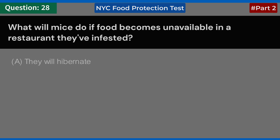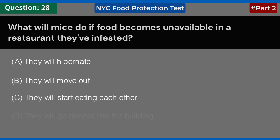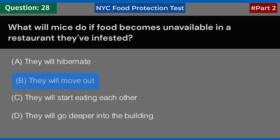What will mice do if food becomes unavailable in a restaurant they've infested? A. They will hibernate. B. They will move out. C. They will start eating each other. D. They will go deeper into the building. Answer: B. They will move out.